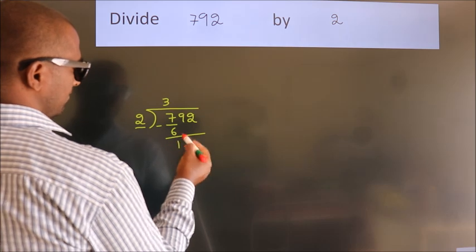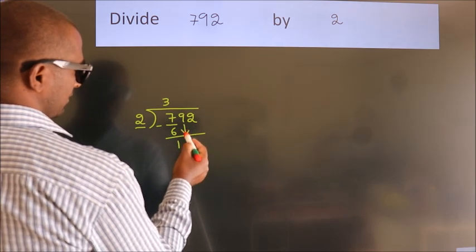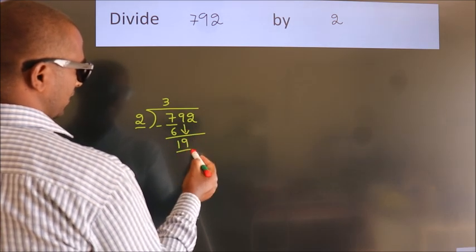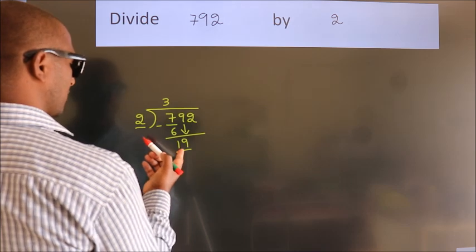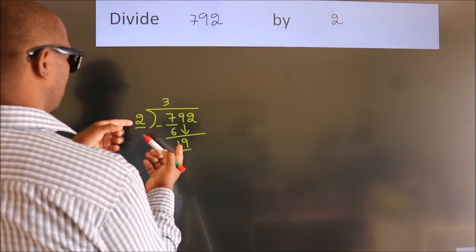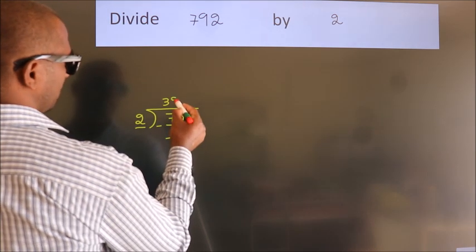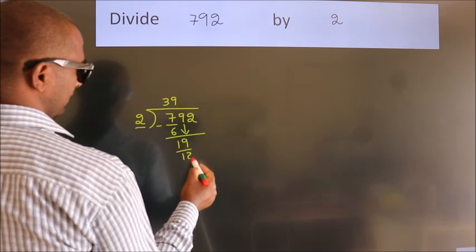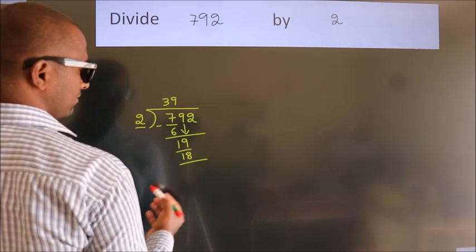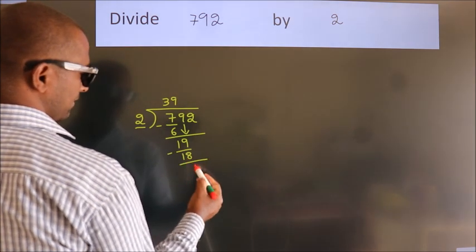After this, bring down the beside number. So, 9 down, so 19. A number close to 19 in the 2 table is 2 nines, 18. Now we subtract. We get 1.